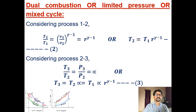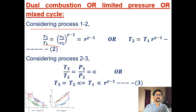For process 1 to 2 (isentropic), using the temperature–volume relationship: T2/T1 = (V1/V2)^(γ−1) = r^(γ−1). Therefore T2 = T1 · r^(γ−1). This is equation 2.